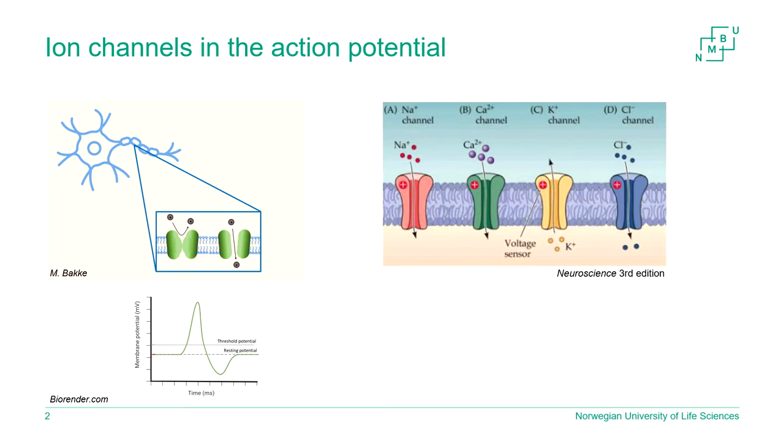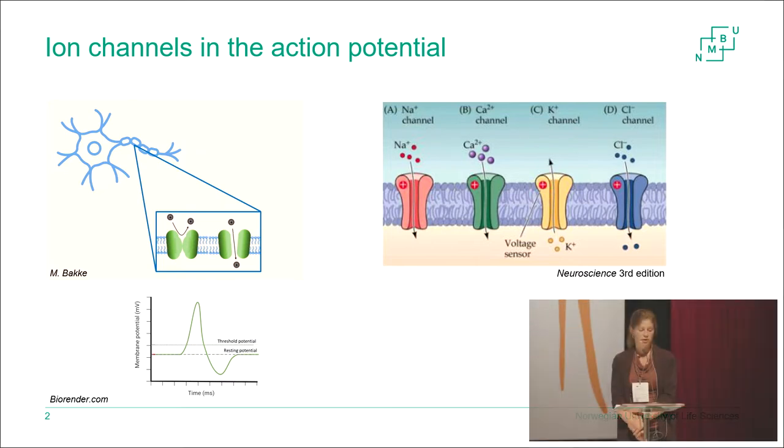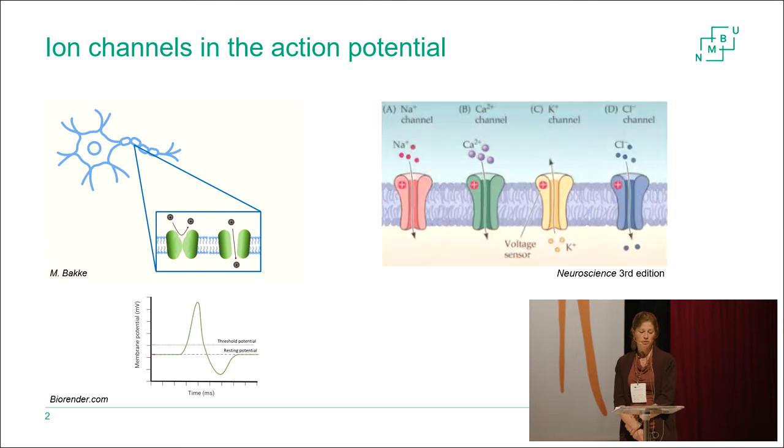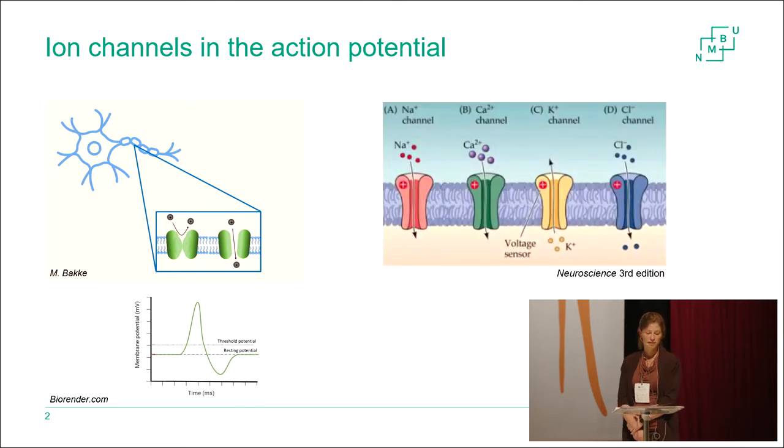The ion channels have a vital function in the transduction of nerve signals. The action potential is carried down the nerve axon by ion channels rapidly opening and closing in response to changes in the membrane potential. These channels belong to the group of voltage-gated ion channels, most of them being permeable to cations.